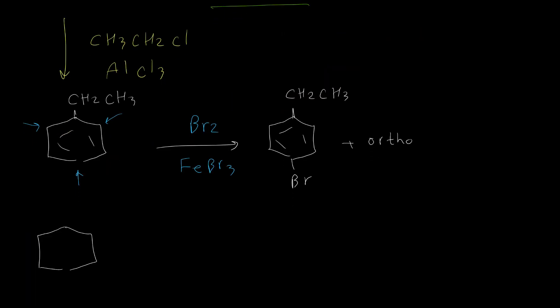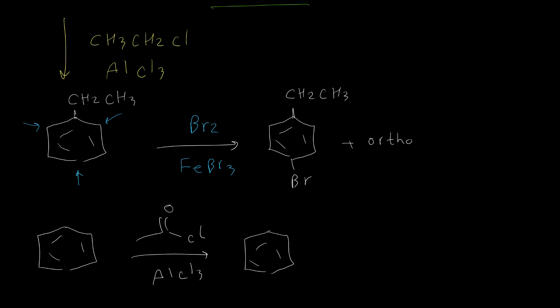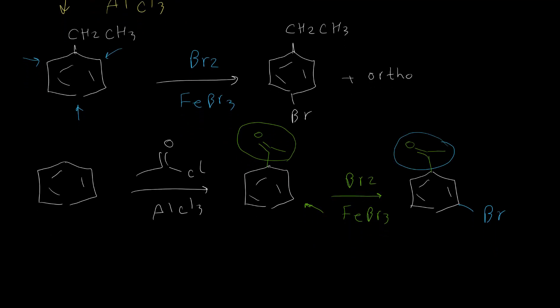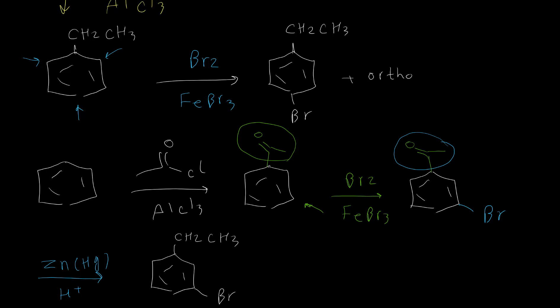To synthesize the meta product, instead of alkylation Friedel-Crafts, I perform acylation Friedel-Crafts reaction, putting an acetyl group on the benzene ring. This acetyl group is a meta director, so by performing bromination, bromine goes to the meta position. In the last step, we convert this acetyl group to an ethyl group by reduction — the Clemmensen reduction using zinc-mercury amalgam in acidic conditions. This removes the oxygen from the acetyl group, reducing it to the alkyl group. We may also use hydrogenation, but this method is very effective for removing oxygen from acetyl or other acyl groups on the benzene ring.